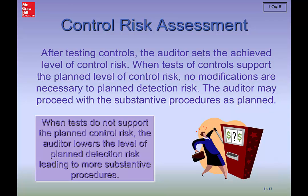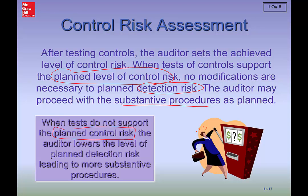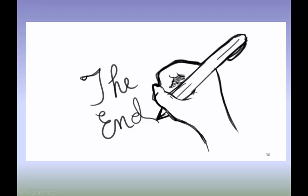Once you test the controls and establish the level of control risk, you use that risk level to guide how much testing of internal controls is needed and whether any modifications to the audit plan are required to address detection risk. You may have to perform substantive procedures, and when the tests do not support the planned level of control risk, you must lower the level of detection risk — which means increasing your substantive procedures testing. That concludes our video lecture.